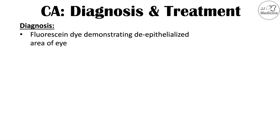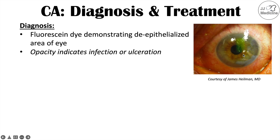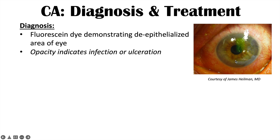The diagnosis of corneal abrasions is done using fluorescein dye, which demonstrates de-epithelialized areas of the eye. The dye attaches to the de-epithelialized area where the corneal abrasion occurs. You can see the fluorescein dye here indicating a corneal abrasion. If there is a very stark white opacity on the cornea, this can indicate an infection or ulceration.